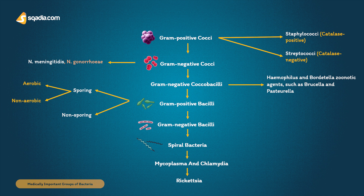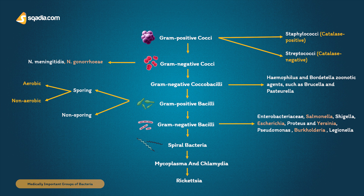The non-sporing pathogens include Listeria and Corynebacteria. Gram negative bacilli, including the family Enterobacteriaceae, form part of the normal flora of humans and animals and can be found in the environment. They include many pathogenic genera: Salmonella, Shigella, Escherichia, Proteus, and Yersinia.